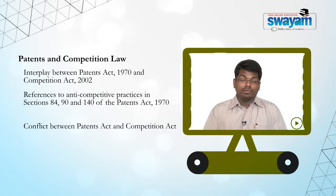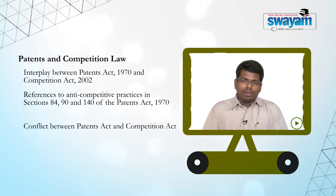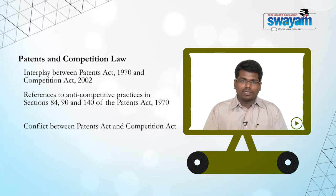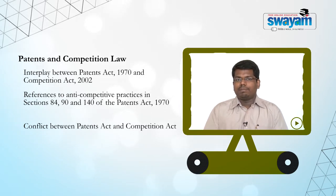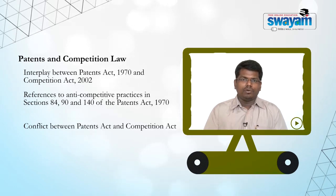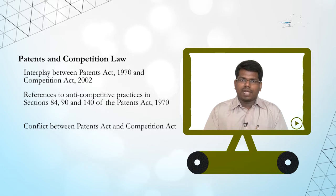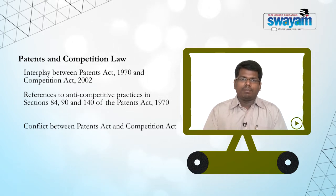A compulsory license does not in any way create a punitive deterrence against a patentee to prevent future abuse of the patent right. It cannot be anybody's case that the only consequence of the abuse of a patent right shall be the grant of a compulsory license with no other punitive consequence. The consequence of such a proposition would be that abuse of patents would be completely outside the purview of the Competition Act, which does not seem to be the intent of the legislature given the breadth of section 19 of the Competition Act, which does not exclude the Patents Act.